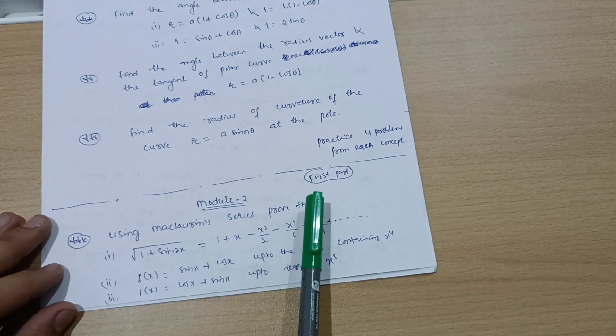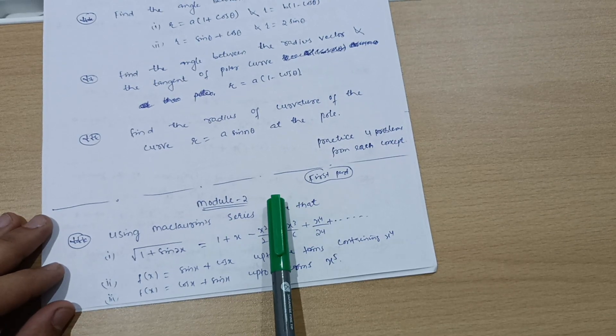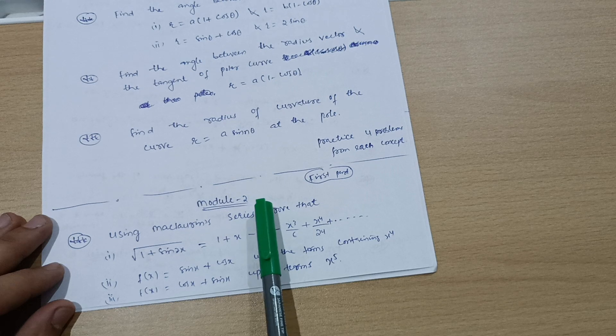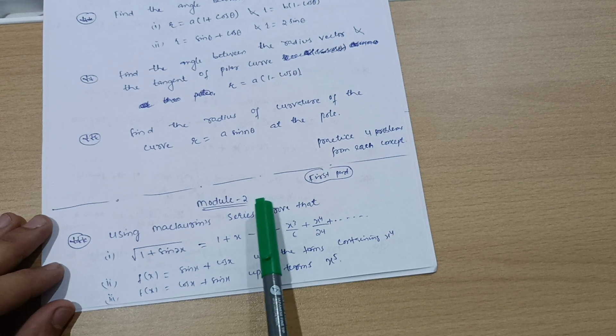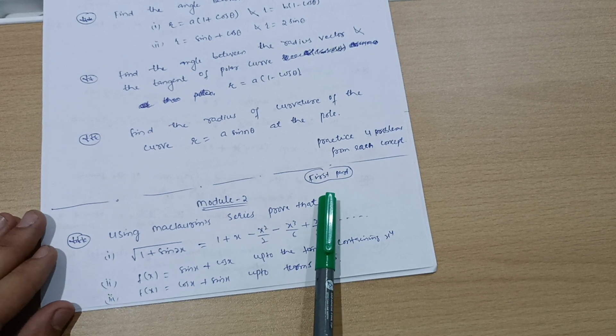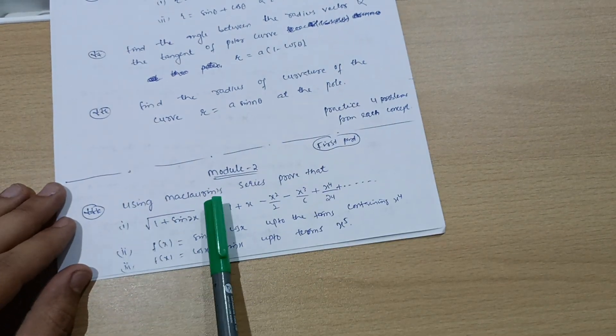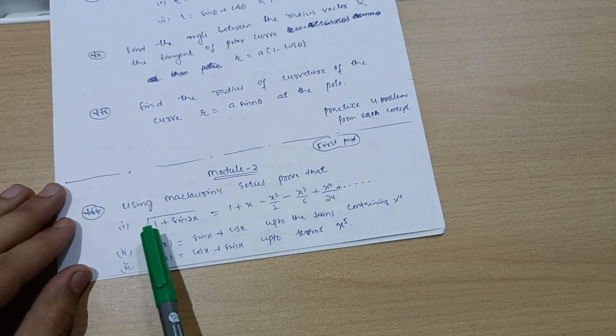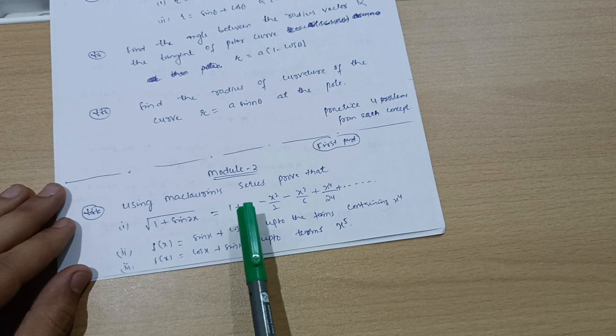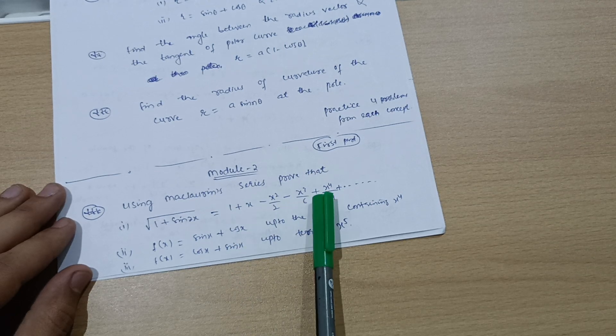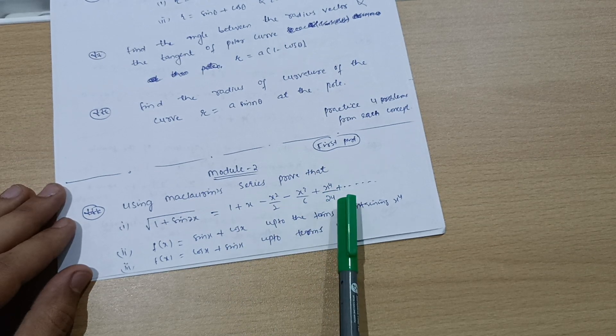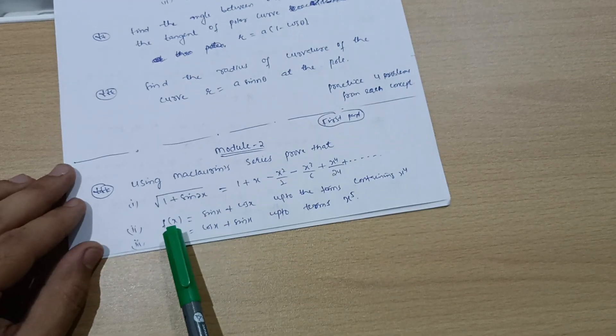Next is Module 2. In Module 2 you can cover only first part, no need to go for the second part. Using Maclaren's series, prove that square root of 1 plus sine 2x equals 1 plus x minus x squared by 2 minus x cubed by 6 plus x to the power 4 by 24 plus so on.